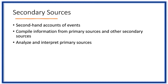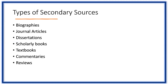Secondary sources offer second-hand accounts of events. They compile information from primary sources and other secondary sources, and they analyze and interpret the raw data of primary sources. Secondary sources can include textbooks, scholarly articles, and academic books. Here are some more examples of secondary sources.